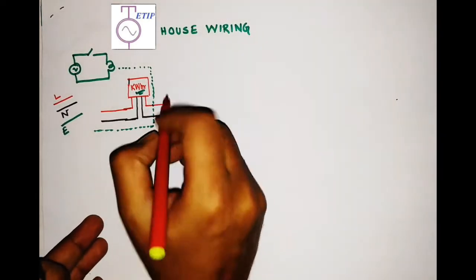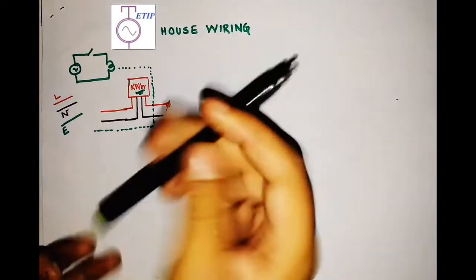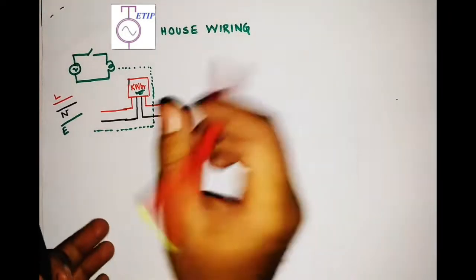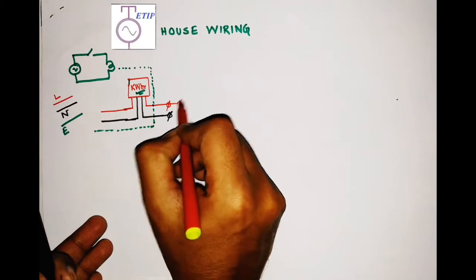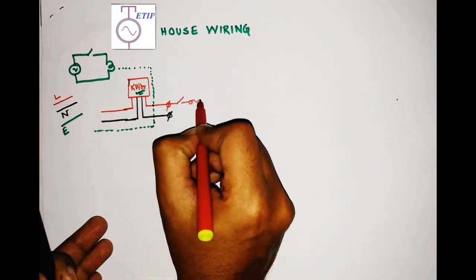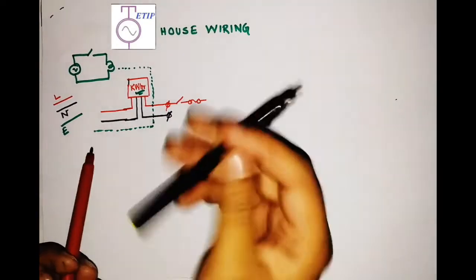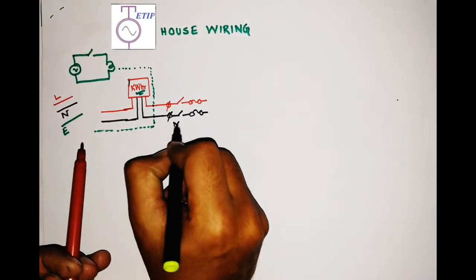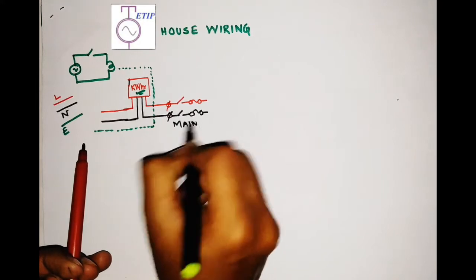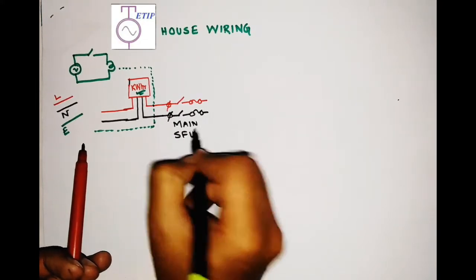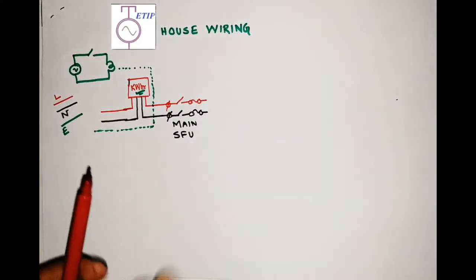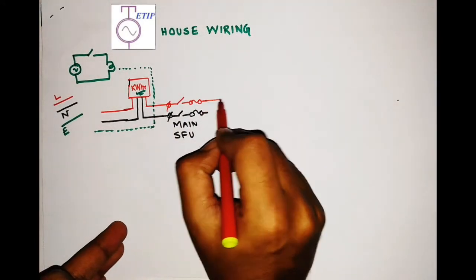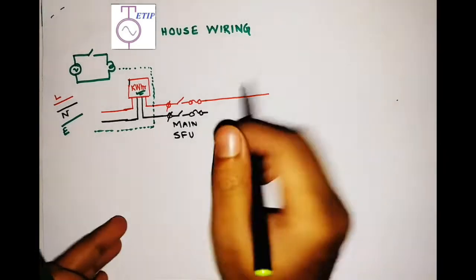From the meter terminals — which are your terminal point — you can start your circuits. First comes the main switch: this is the main SFU, or Switch Fuse Unit. This has the switch and a fuse unit for your protection. From here, the load circuits begin.